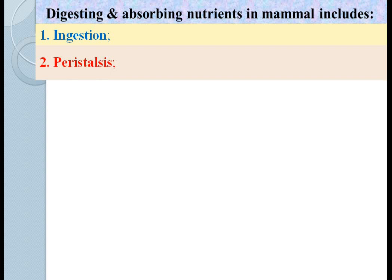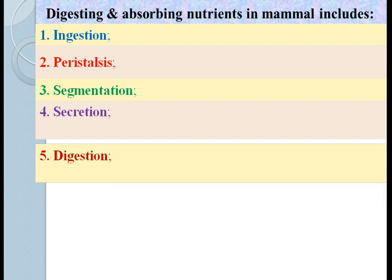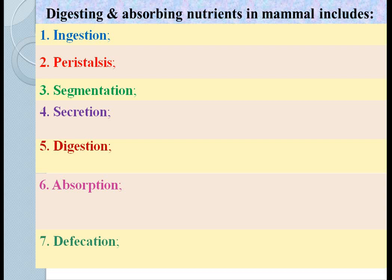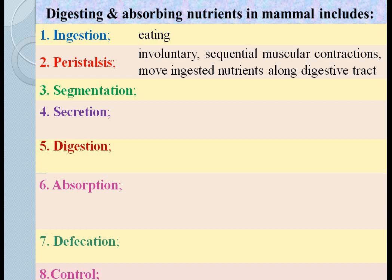Digesting and absorbing nutrients in mammals includes ingestion, peristalsis, segmentation, secretion, digestion, absorption, defecation and control. Ingestion refers to eating. After ingestion, food is transported along the digestive tract by peristalsis. Peristalsis consists of involuntary sequential muscular contractions — these contractions occur in a sequence and cannot be controlled by our will — and because of these contractions, ingested nutrients move along the digestive tract.